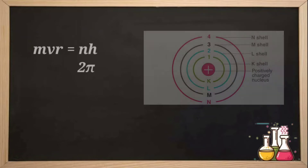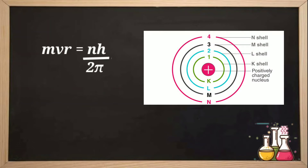Now the quantization condition says that when electrons revolve in circular orbits, their angular momentum is an integral multiple of h by 2π. So L equals h by 2π, or 2h by 2π — integral multiple means we multiply by an integer n. We can write L equals n·h by 2π, where n equals 1, 2, 3, 4 and so on. Here n denotes the shell number.